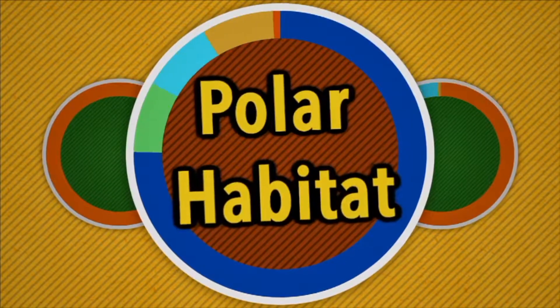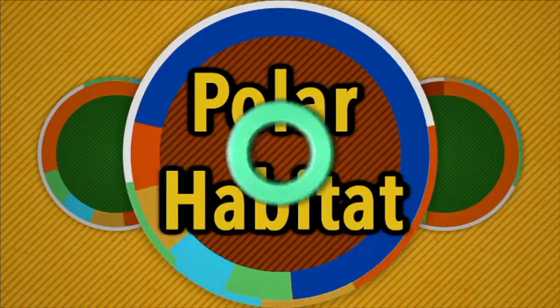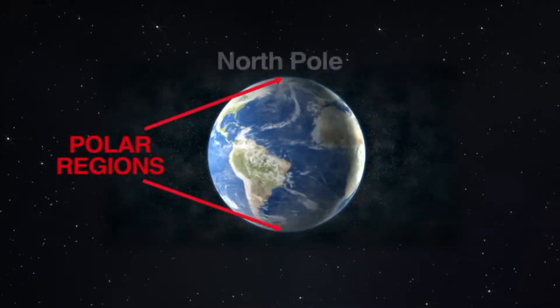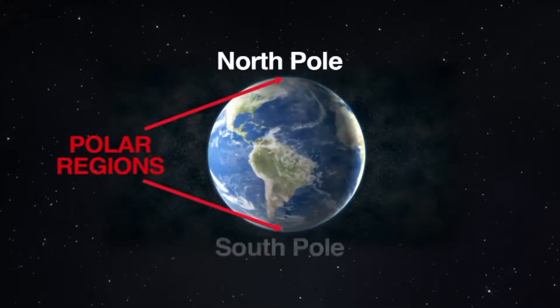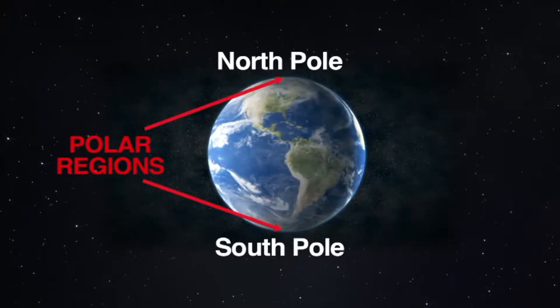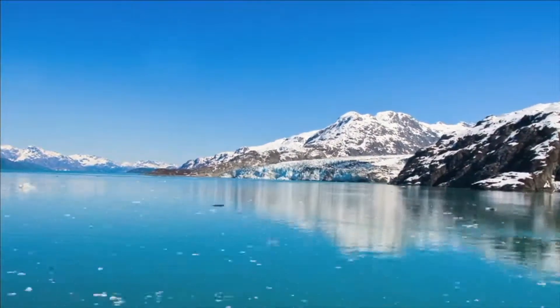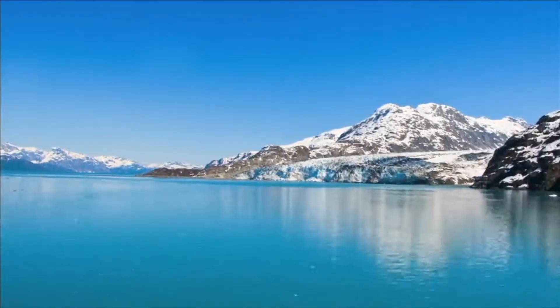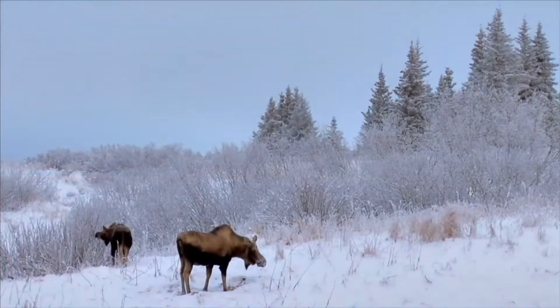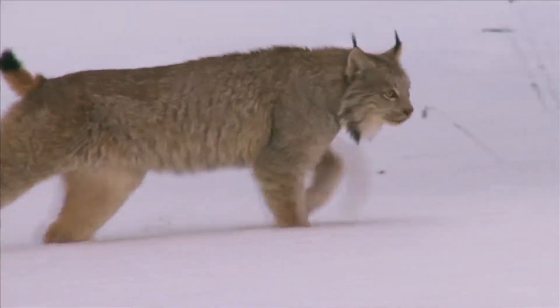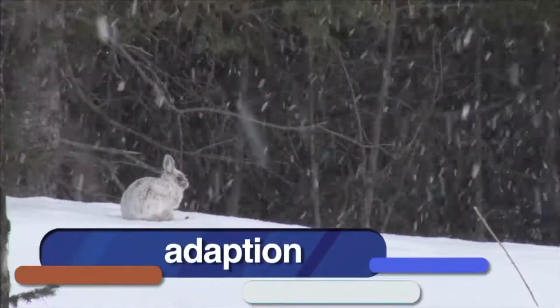The Polar Habitat. Our first stops are to the polar regions of the earth, where it's very cold. The polar regions are found to the very northern part of the earth, called the North Pole, and to the very southern part of the world, the South Pole. These two areas have very cold climates and are covered by ice and snow. There are very few plants, and the animals who live in the polar regions have developed so that they are able to survive in this harsh, cold habitat. We call these changes adaptation.